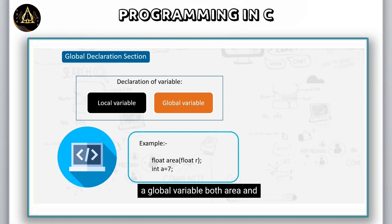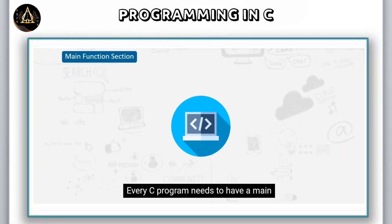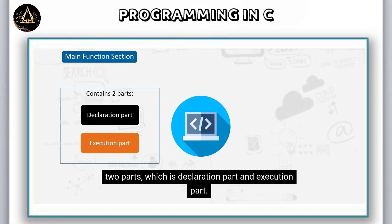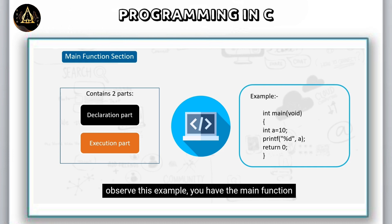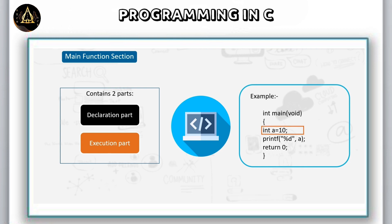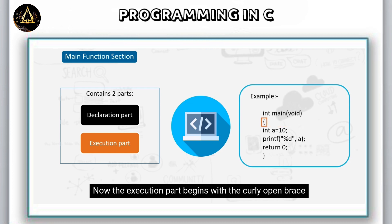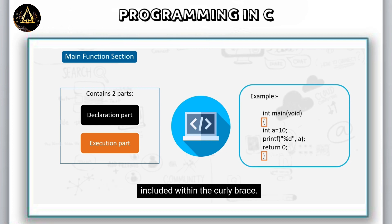Every C program needs to have a main function, and each main function consists of two parts: the declaration part and the execution part. The declaration part is where all variables are declared. For example, int a = 10 is the statement where variable a is declared. The execution part begins with an open curly brace and ends with a closing curly brace. Both the declaration part and execution part must be included within the curly braces.